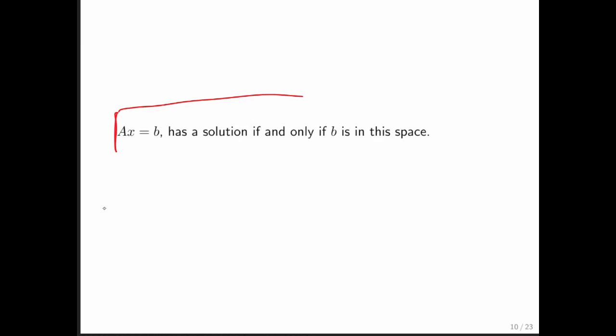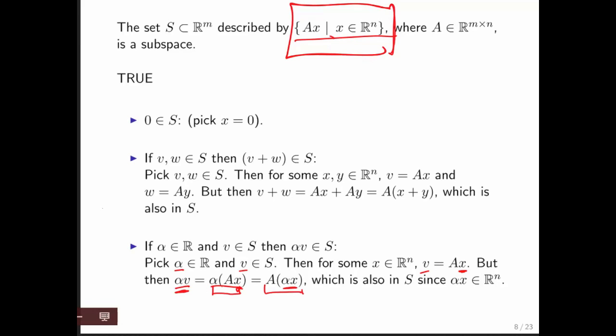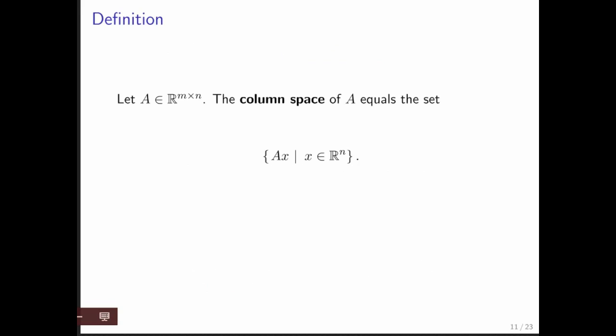So, A times X equals B. This is the big question that we've been asking all along. Under what circumstances does the linear system described by AX equals B have a solution? Well, it has a solution if and only if B is in this space, this subspace. That particular subspace has a special name. It's called the column space of A. And it's the set of all vectors that can be achieved by multiplying A times some other vector X.